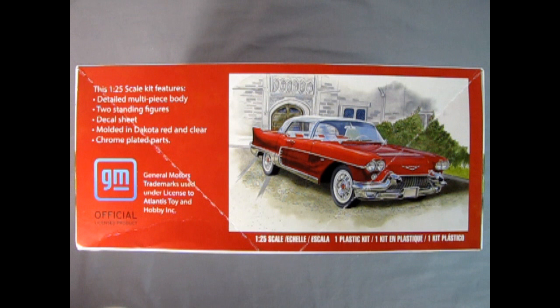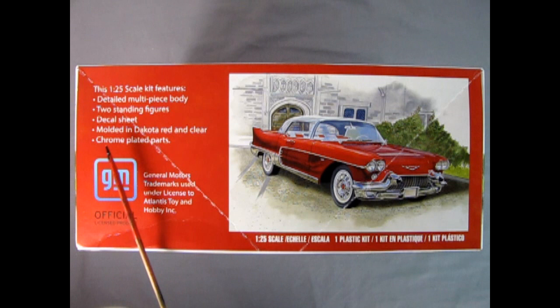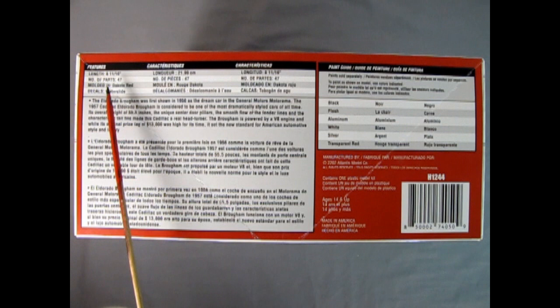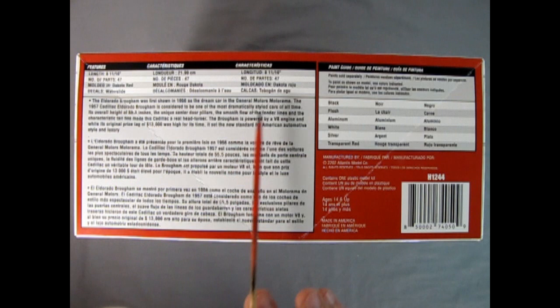On this side of the box, we can see our wonderful Cadillac sitting in front of this beautiful building in the back. This 1/25th scale kit features a detailed one-piece body, two standing figures, decal sheet, is molded in Dakota red and clear, and has chrome plated parts. The data sheet for this car is on this side of the box, and we can see that it is 8 and 11/16ths inches long. There are 48 parts, molded in Dakota red with water slide decals. And over here we have our paint call-out sheet as well. These are all the paints you're going to need in order to make this model kit look terrific.